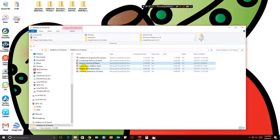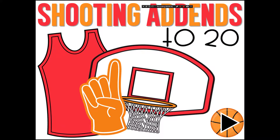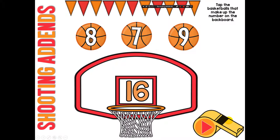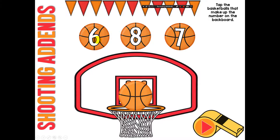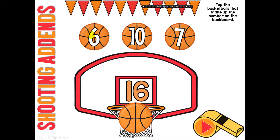'Shooting Add-ins to 20' has students click two basketballs to equal a target sum. To equal 16, I click 9 and 7. If I click the 8, I don't make any baskets. For example, 6 plus 8 equals 14, or 10 and 6, and so on.